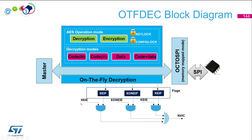There are three error events possible. The security error results from an illegal read or write access to the key registers, or an illegal write access to a region configuration where the config is locked. There is also the execute-only and execute-while-encryption error, due to a read access to an execute-only region or attempting to execute a region while encryption is enabled.